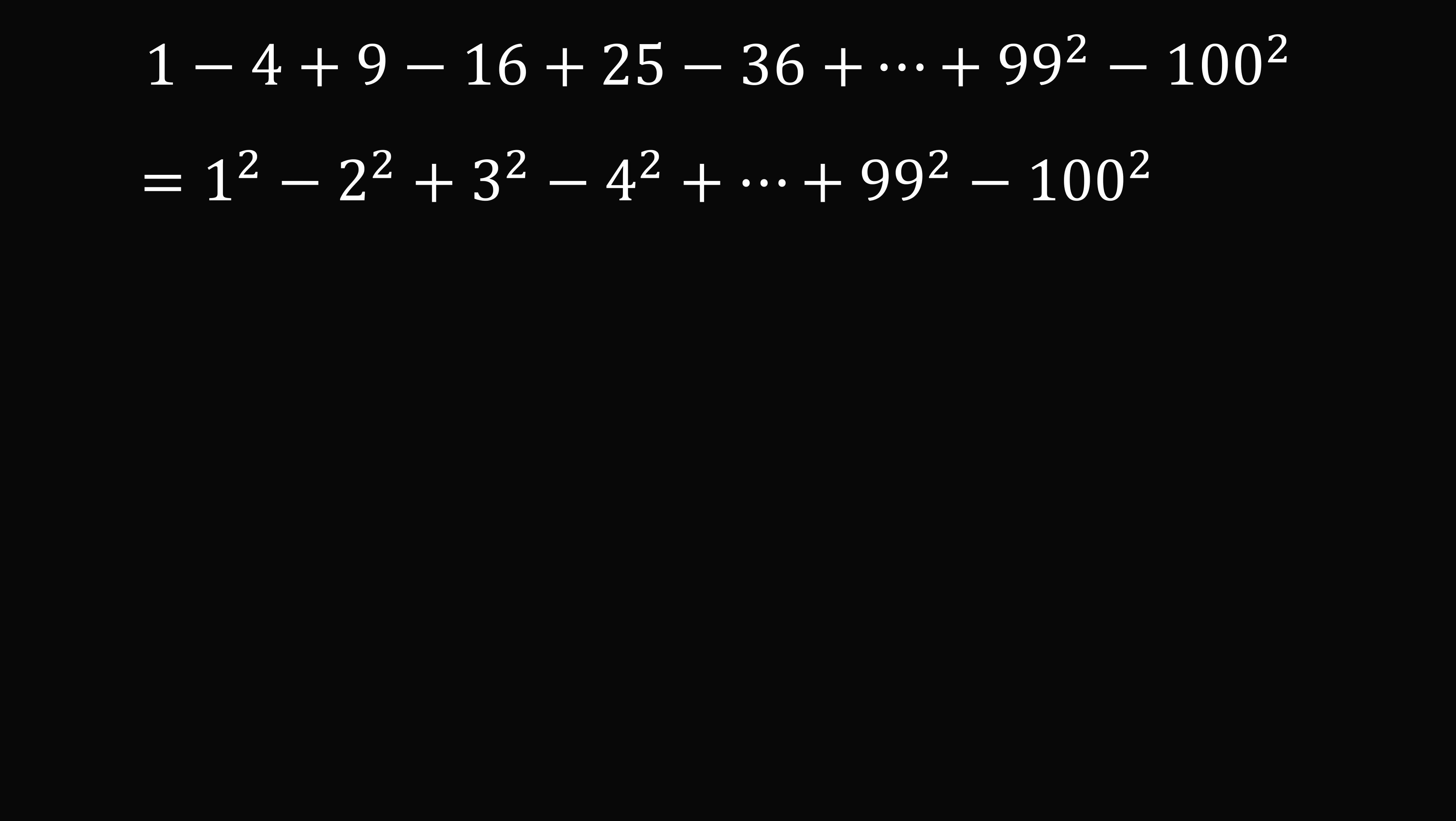We'll use the formula for the difference of squares on every pair of terms. So we have 1 minus 2 multiplied by 1 plus 2, 3 minus 4 multiplied by 3 plus 4, and so on until 99 minus 100 multiplied by 99 plus 100. When we evaluate this sum, every single term will have a negative 1. So we have negative 1 multiplied by 1 plus 2, negative 1 multiplied by 3 plus 4, and so on. We have negative 1 multiplied by 99 plus 100.